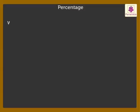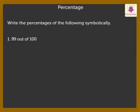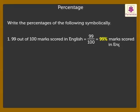Now, let's write the percentages of the following symbolically. 99 out of 100 marks scored in English. That means 99 upon 100, which is equal to 99% marks scored in English.